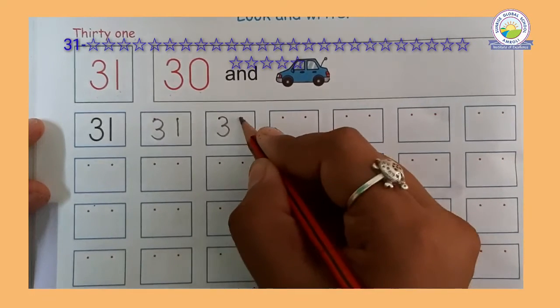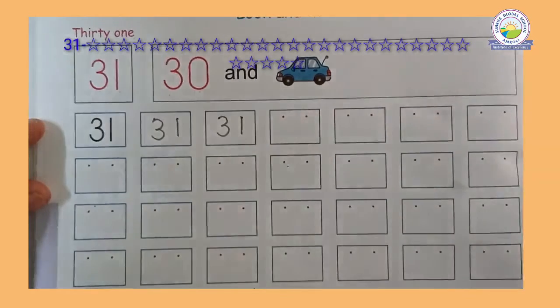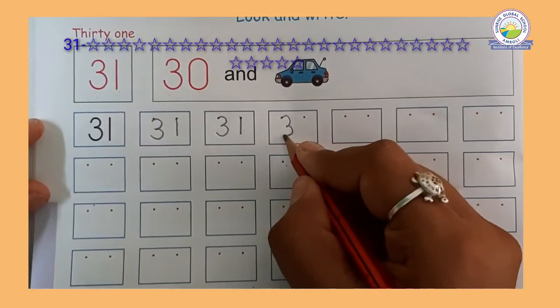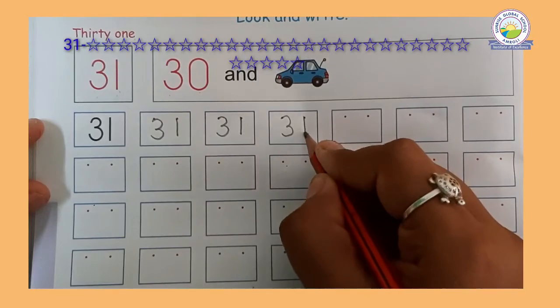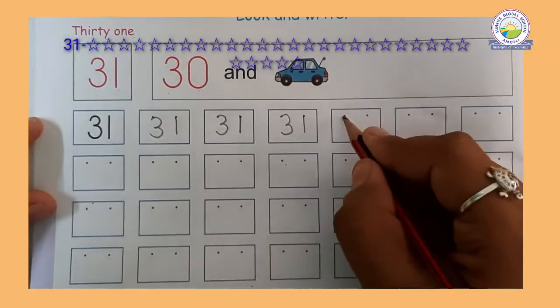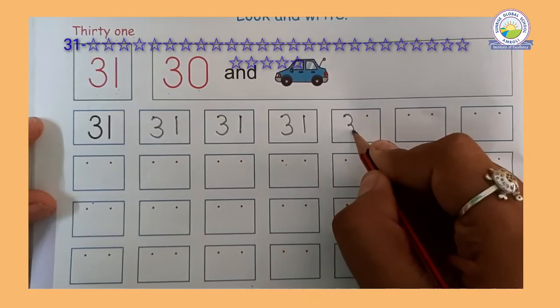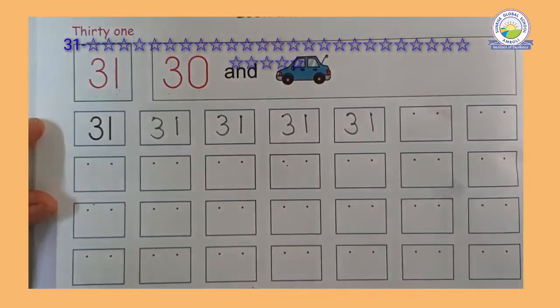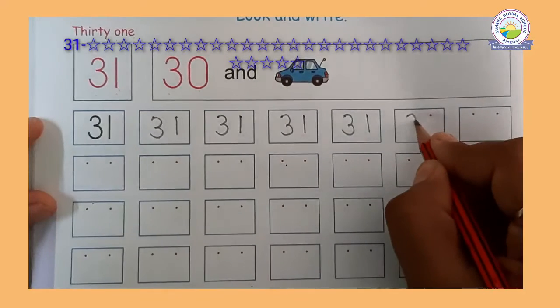3 and 1, 31. After 30, which number will come? 31. 31. Half circle, again half circle. Then standing line. 3 and 1, 31.